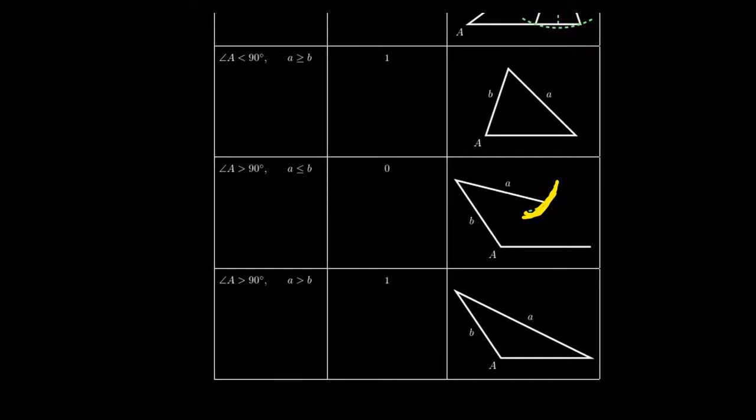In the other situation, if angle A is greater than 90 degrees, but little a is bigger than B, then you get a unique possible triangle. This has to be the longest side. This demonstrates all six possibilities.